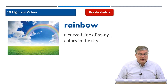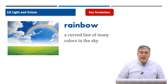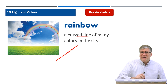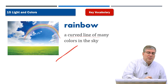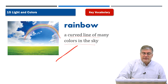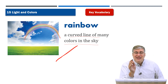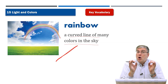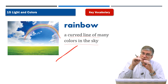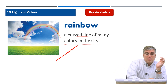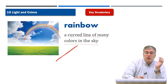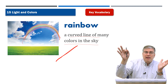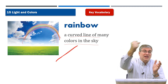Rainbow — I talked about that before when we talked about prism. A rainbow is a curved line of many colors in the sky. Rainbows are never straight lines — that would be weird. What's going on? Remember, glass acts as a prism and splits light into many colors — but water does the same thing. After it's rained, there's a lot of moisture in the air. Sunlight passes through that moisture and it creates a rainbow because the sunlight is split into different colors.